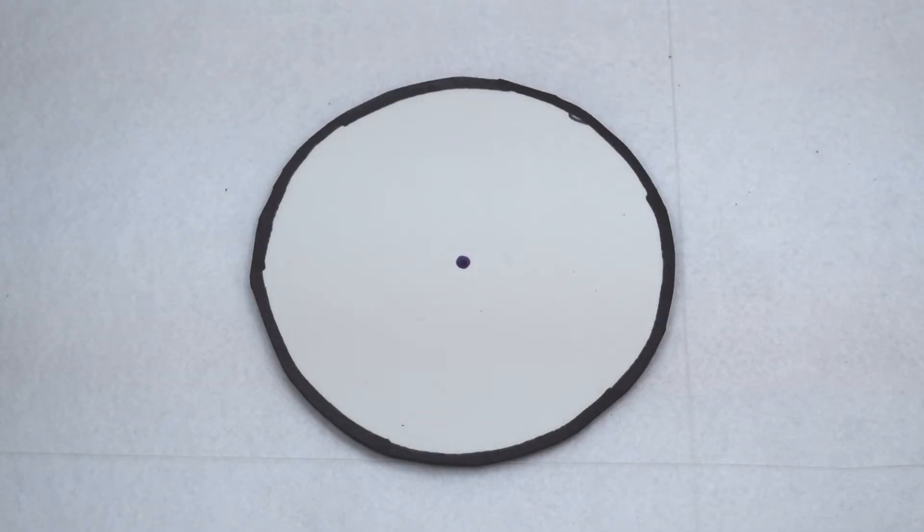When we work with shapes, circles come up quite often. Circles are not polygons, though, because they are not made up of a set of edges. Instead, circles have their own unique set of properties.